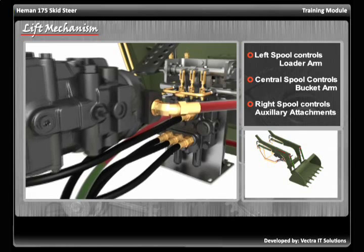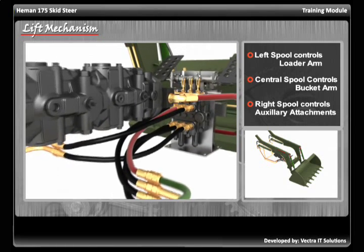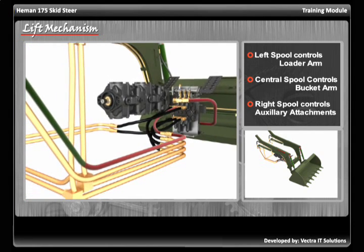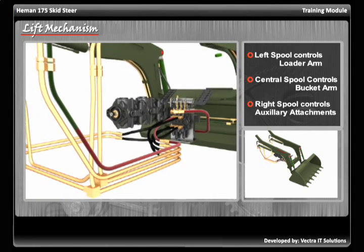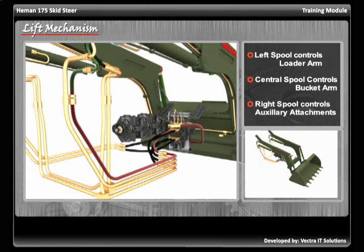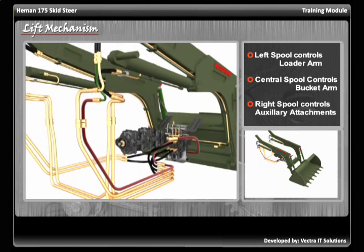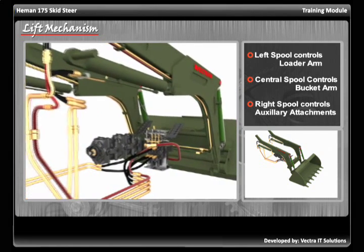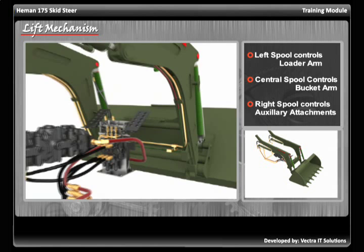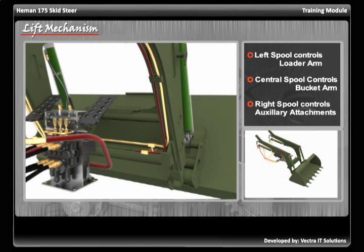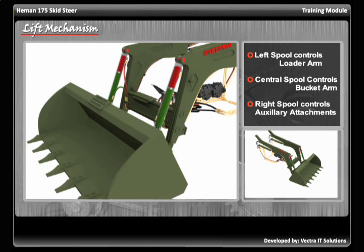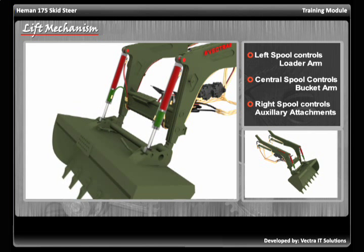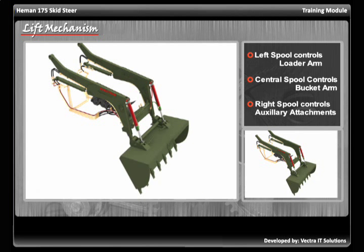The oil travels through the connected hoses to the bucket cylinders, pushing the pistons inside the cylinders. This results in opening of the extension rods of the cylinders, ultimately opening the bucket.